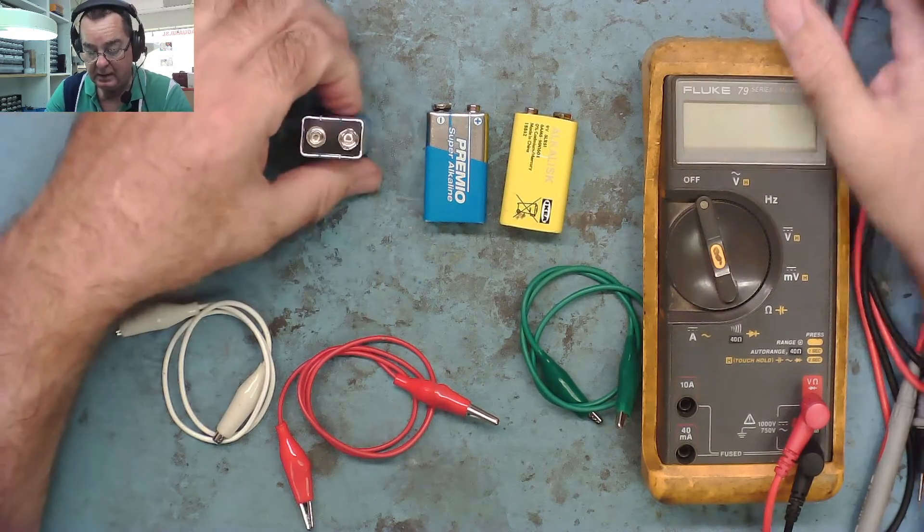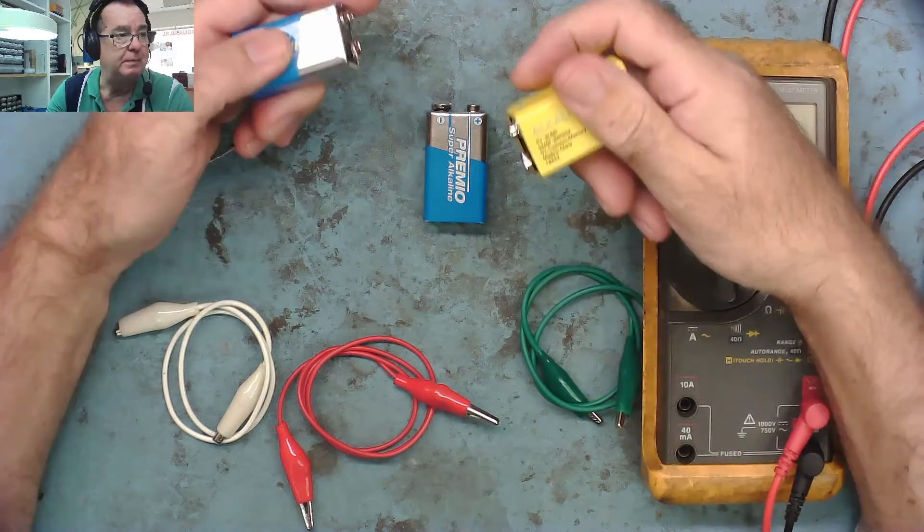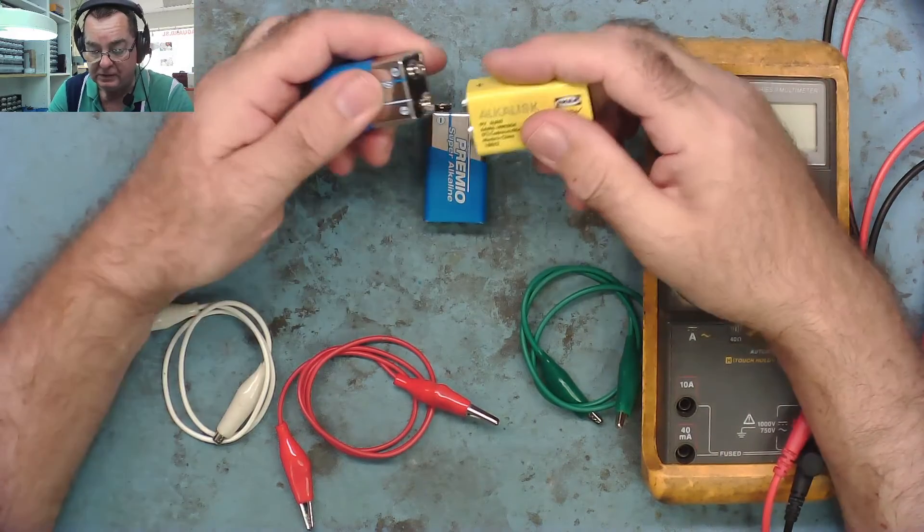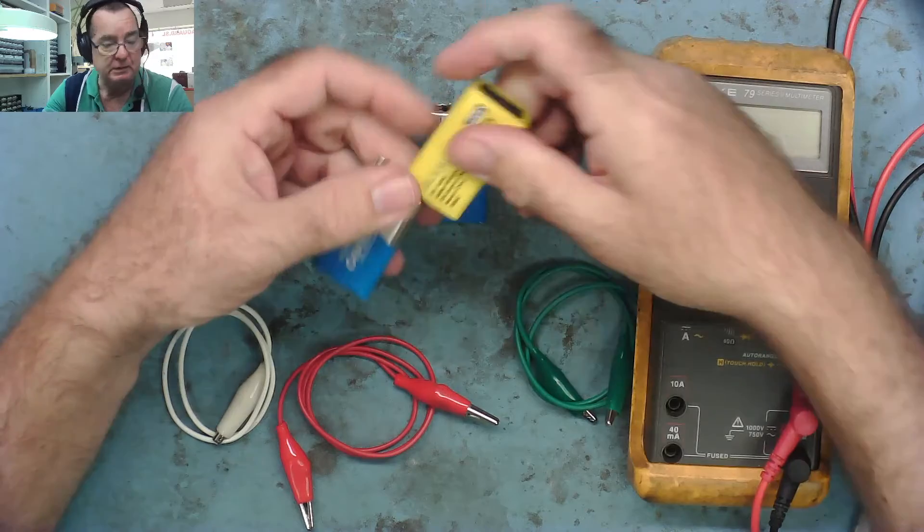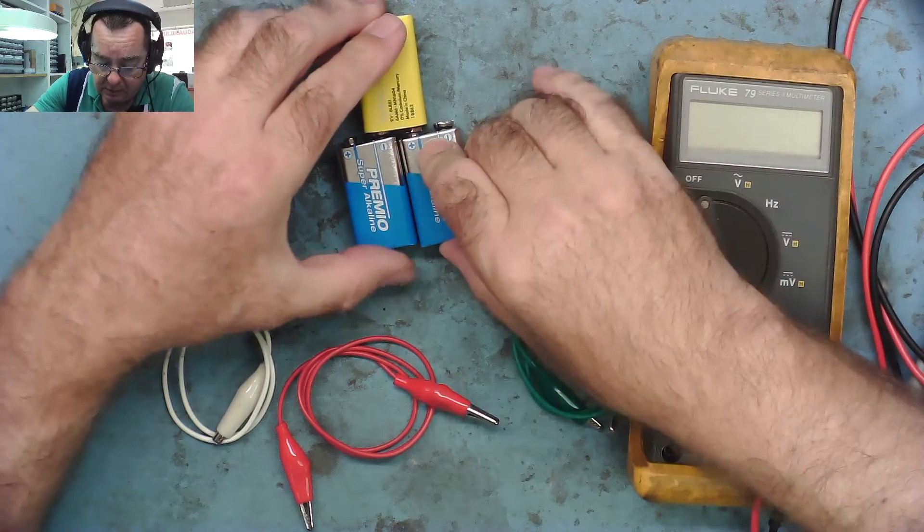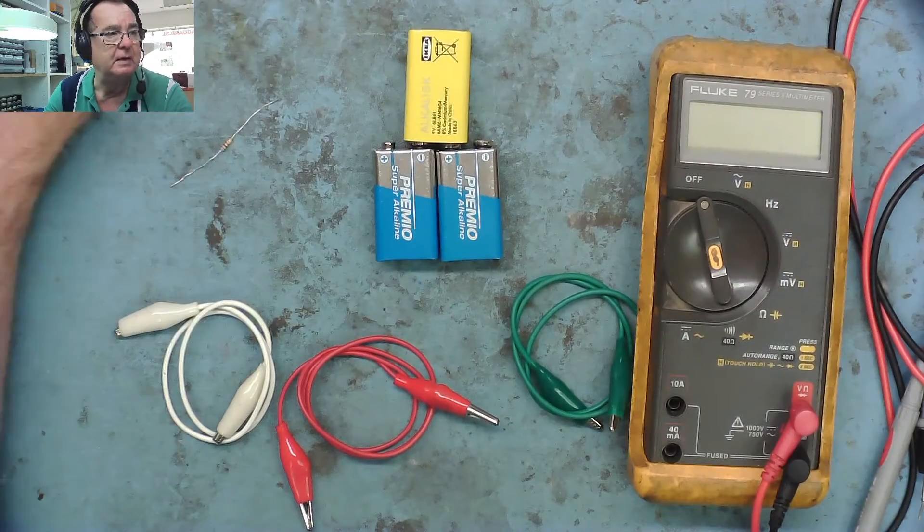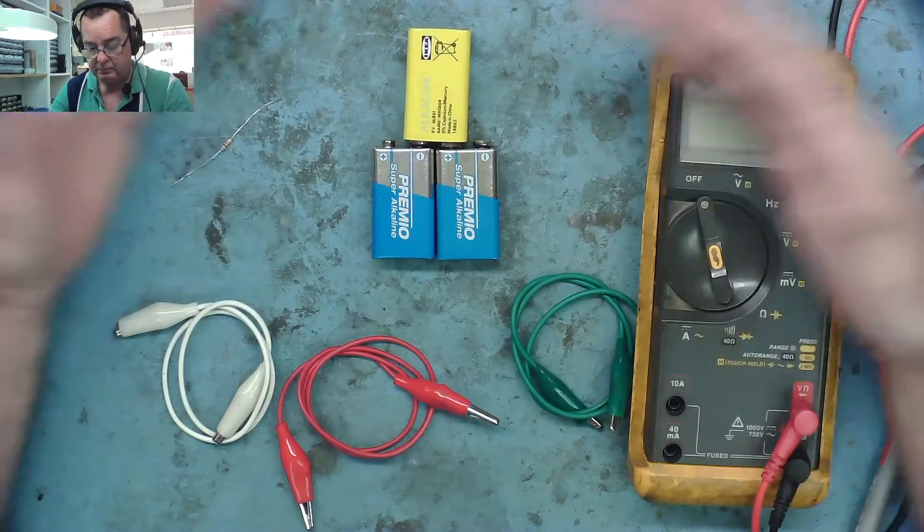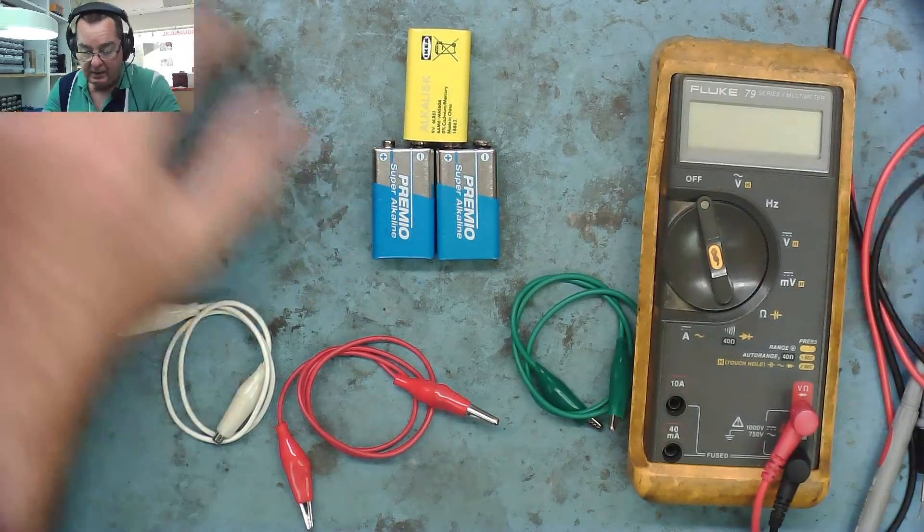So what we're going to do first is put these batteries in series. That's very easy to do - we just clip one battery to the next, and then clip the other battery to the next. Now they're all clipped together, we've got a 27-volt power source.